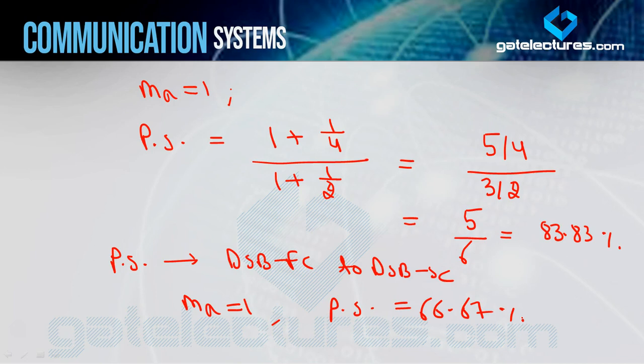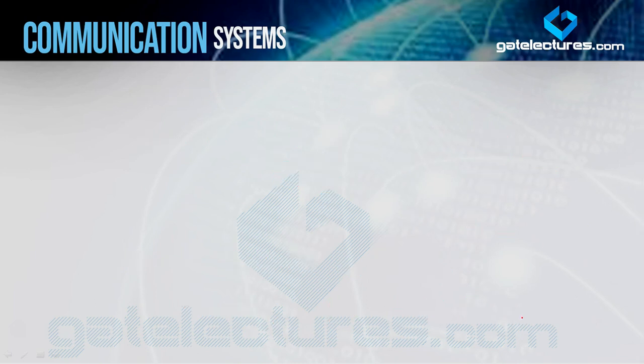Power saving ka generalized formula calculate karna aana chahiye exam mein, kyunki exam mein Ma ki koi bhi value di ja sakti hai — 2, 3, 0.5, 0.8, etc. Ab agar mein DSB-SC ka spectrum show karun — jab humne last class mein yeh banaya tha — range thi fc−fm to fc+fm positive side mein, aur same negative side mein.